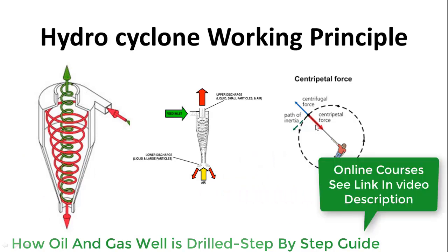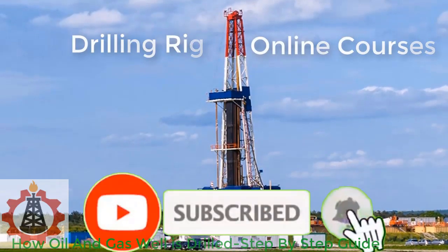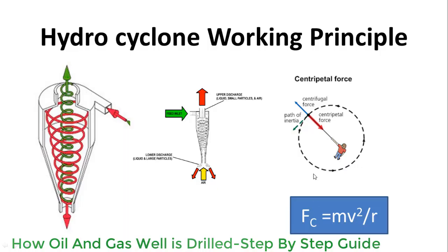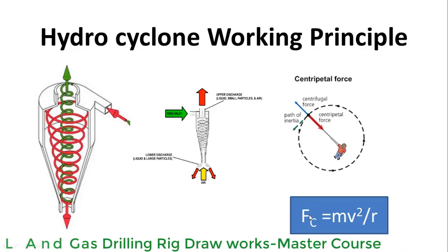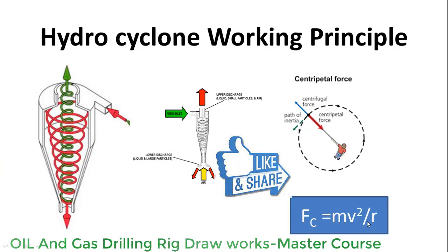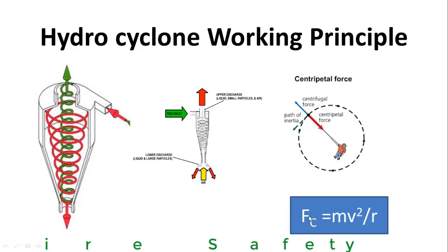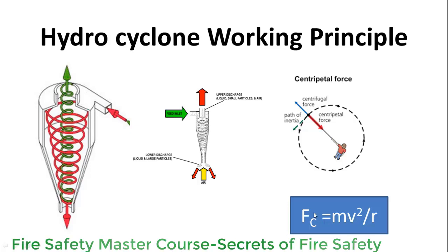The centrifugal force created on an object moving in a circular path is given by: Fc = mv²/r. So centrifugal force is directly proportional to the mass of the object and inversely proportional to the radius of rotation, whereas it is directly proportional to the square of the velocity. This means if velocity is increased two times, centrifugal force increases four times; if velocity is increased ten times, centrifugal force increases 100 times, keeping the other two parameters constant.